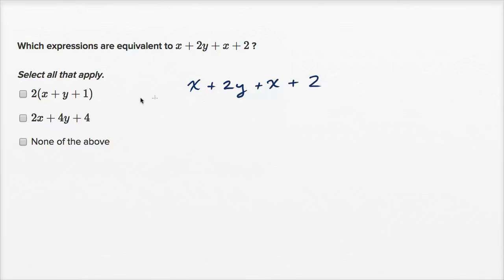So the first thing that jumps out at me, before I even look at these choices here, I have an x over here, I have an x over there. Well, if I have one x and then I add it to another x, that would be 2x. So I could rewrite this.